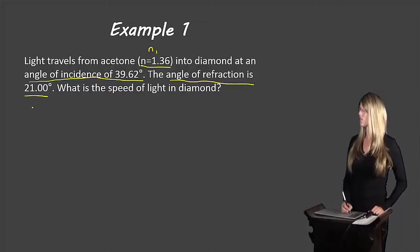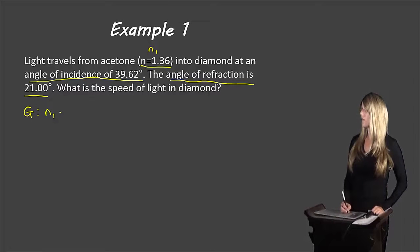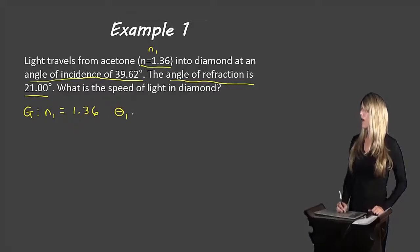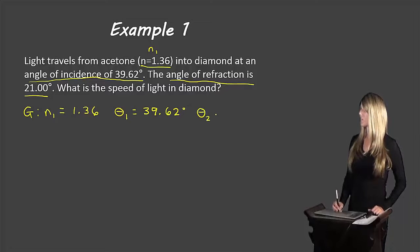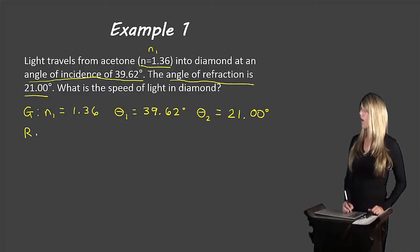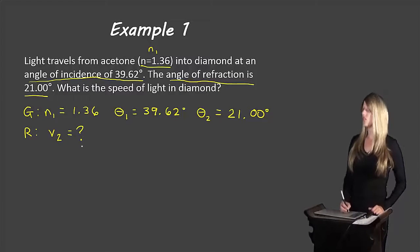Let's write out our givens. We know that n1, because the light started in acetone, is 1.36. The angle of incidence, theta 1, is equal to 39.62 degrees. And our angle of refraction, theta 2, is 21.00 degrees. The required is the speed of light in diamond, and since diamond is the second medium, I'm going to call it V2.